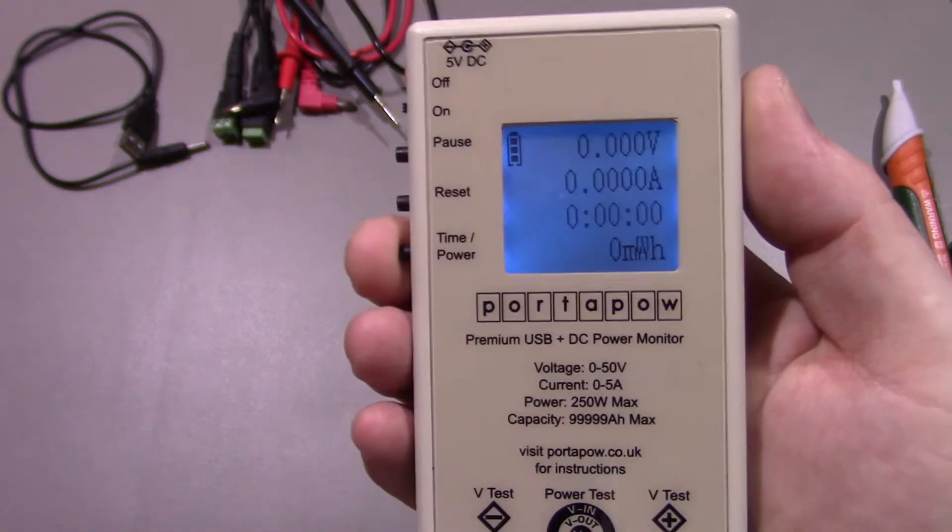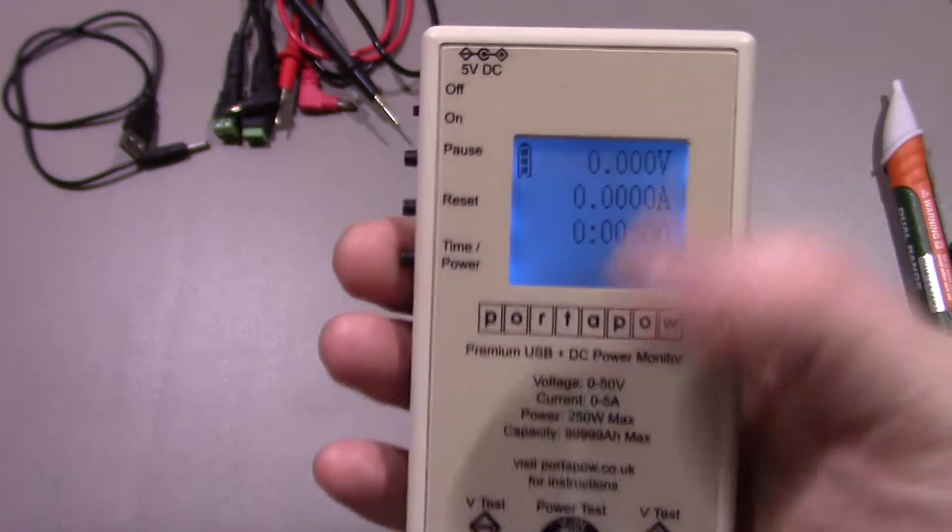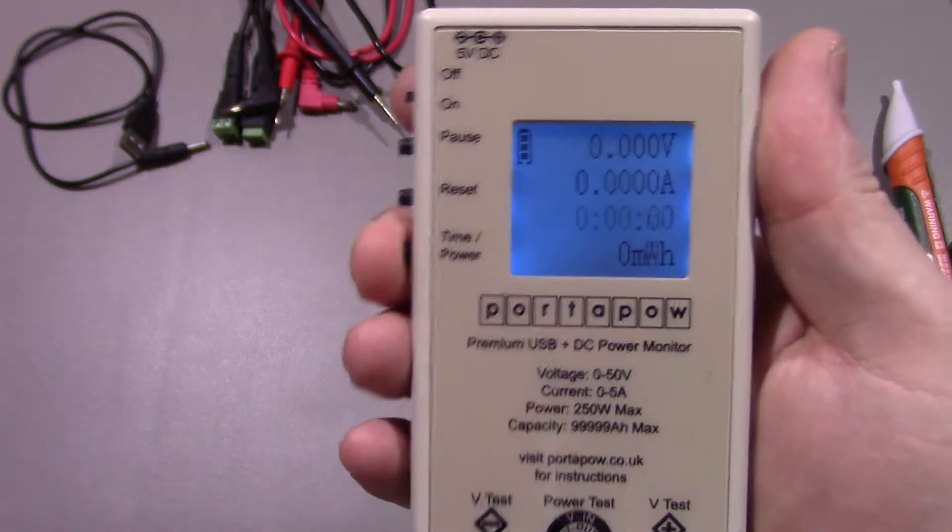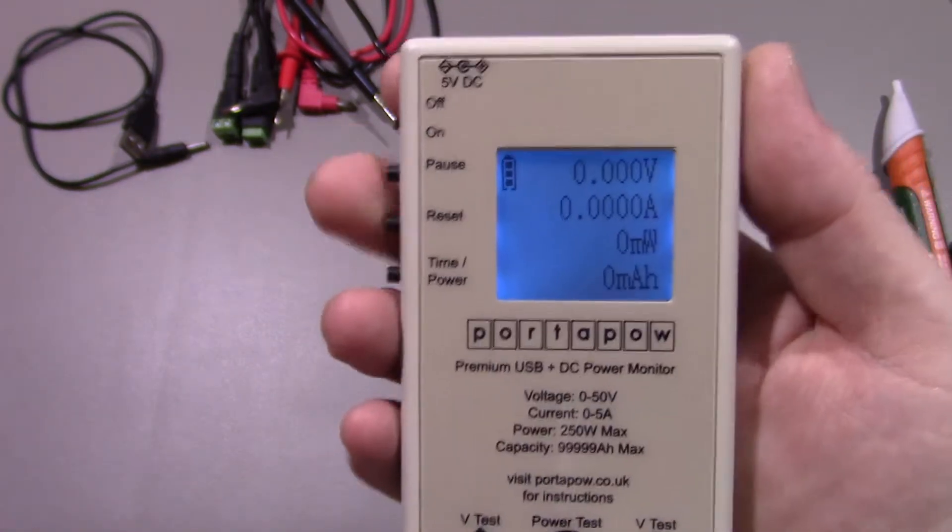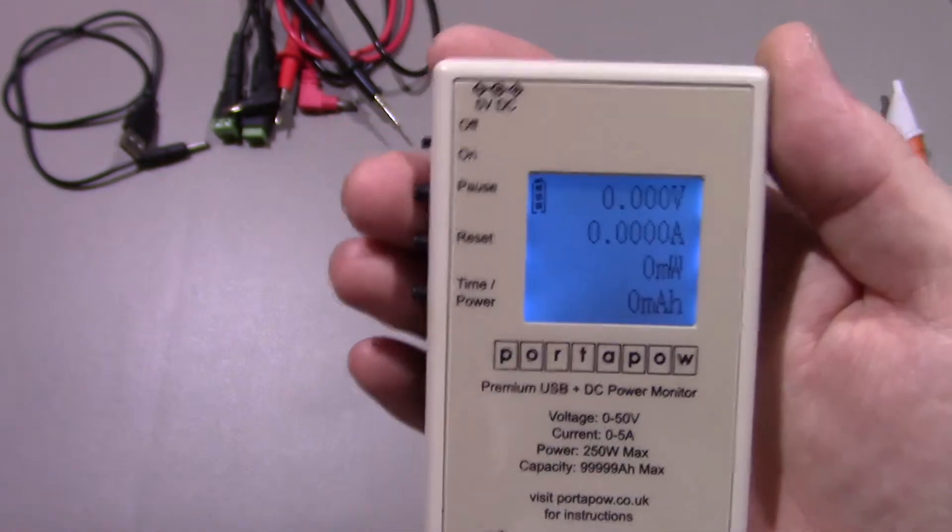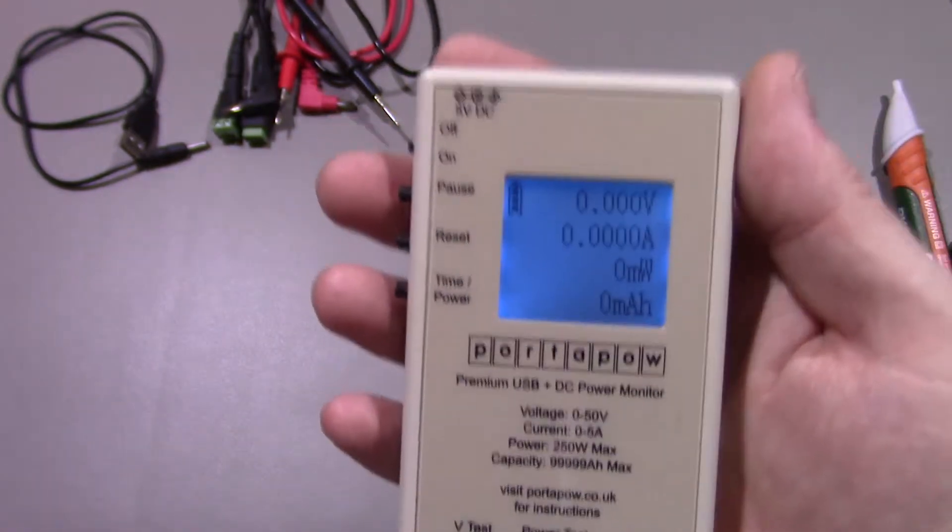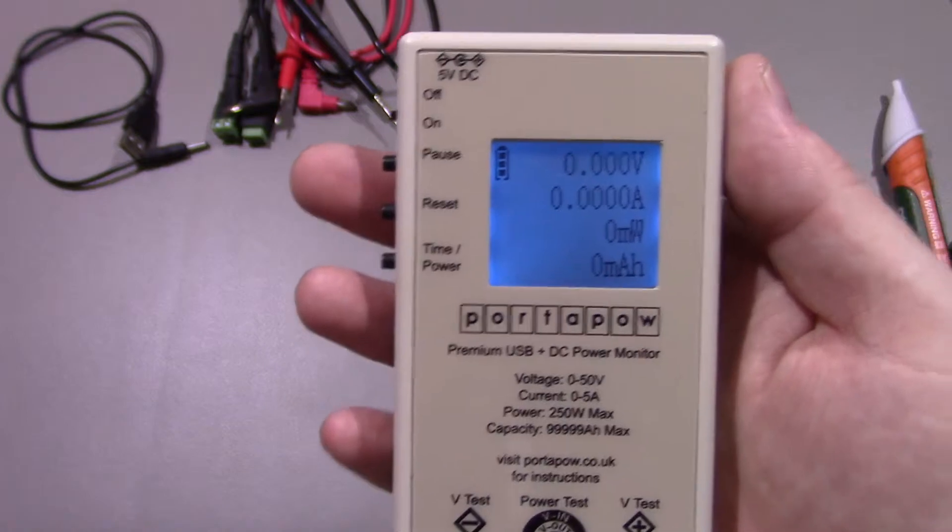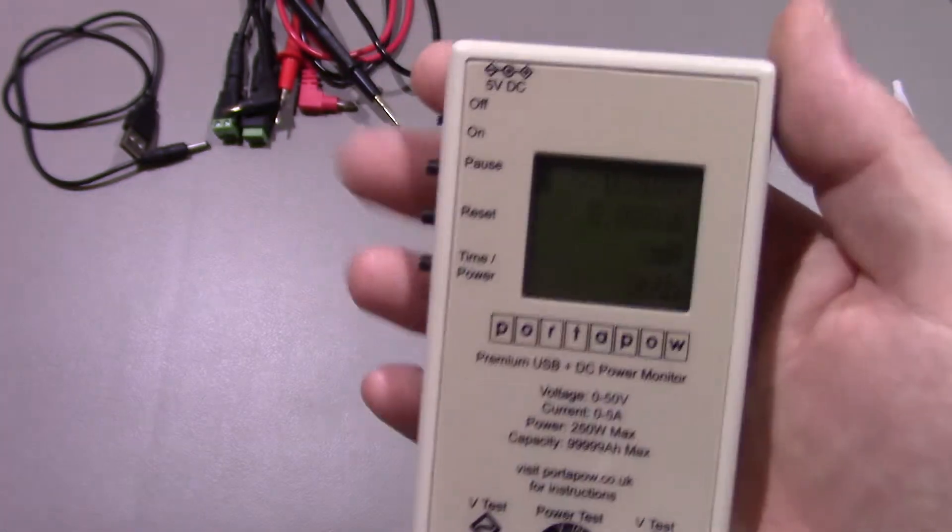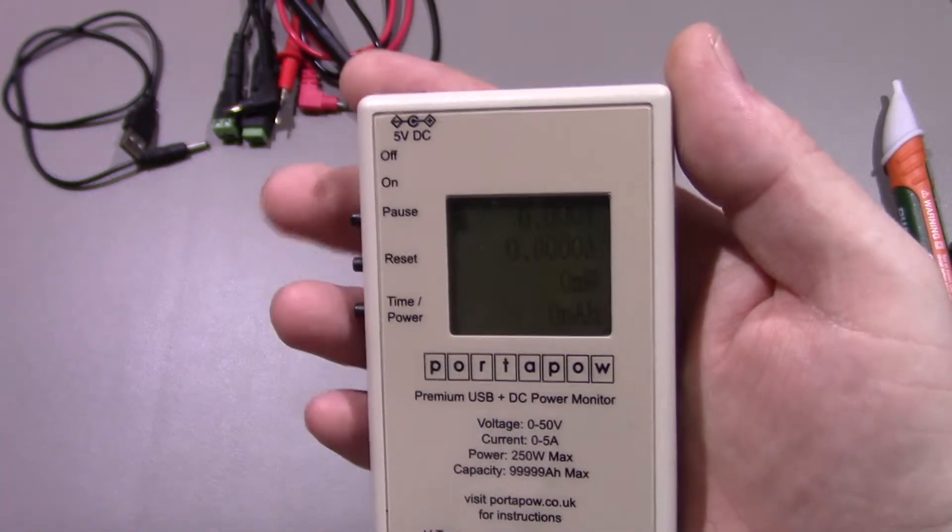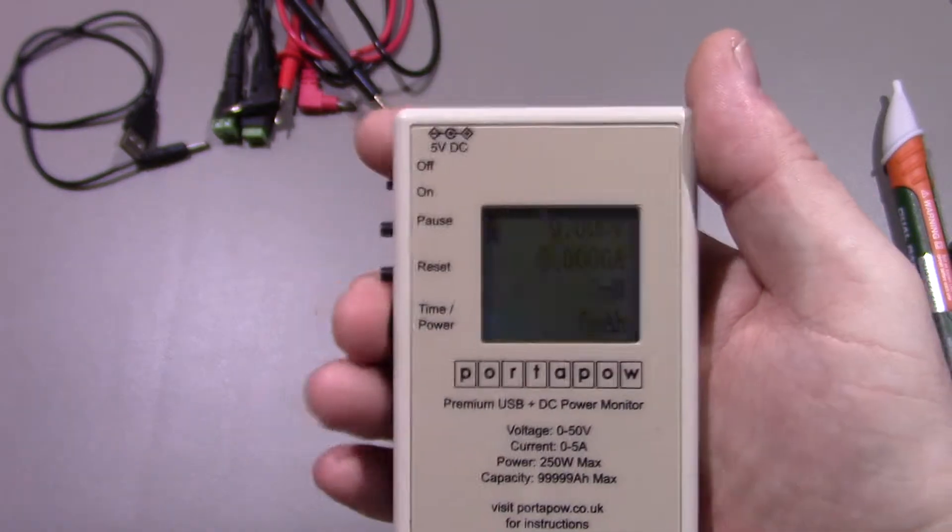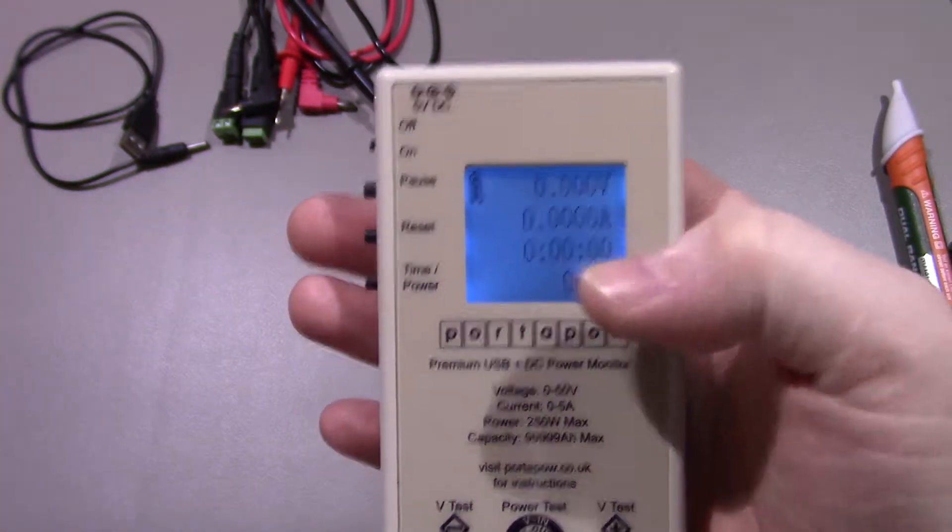If you press the time, it just switches over to how many watt hours. You have got reset. You've got a pause button. Which there isn't any indication on the screen if you have got it paused. Which is a little bit annoying. As you can easily hit the pause button, not realize you've done it. And apart from the fact that if you've got it there, the clock will stop. You don't know.